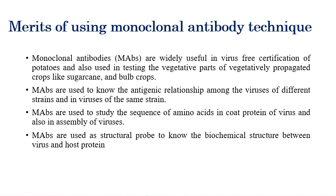Monoclonal antibodies are widely used to produce virus-free certified plants, especially potatoes, and for testing vegetative propagative plants like sugarcane or crop bulbs. MAbs can be used to determine antigenic relationships among plant viruses or different strains of plant viruses. They are also used to identify the amino acid sequence of coat proteins of viruses, understand the assembly of plant viruses, and serve as structural probes to study the biochemical structure between plant viruses and host proteins.